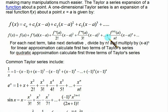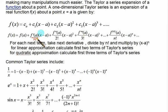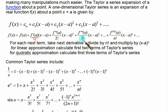In this video we are going to discuss the Taylor series. The formula is f(x) equals f(a) plus f'(a) into (x minus a). You can generate the next term by differentiating, dividing by n factorial, and increasing the power of (x minus a) by 1 each time. So each next term takes the next derivative, divides by n factorial, and multiplies by (x minus a) to the power n.